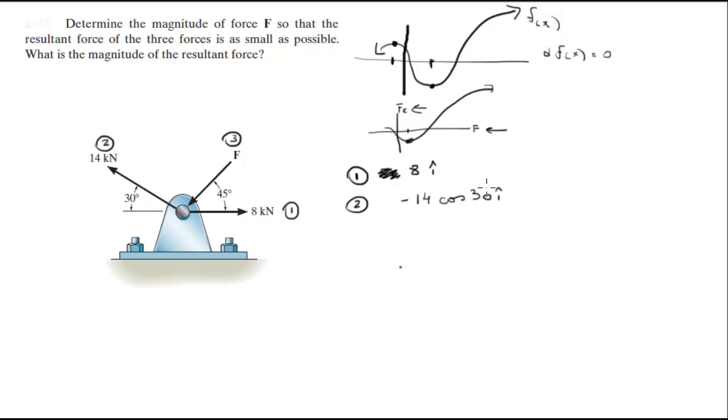30 in the i direction plus 14 sin of 30 in the j direction. Force 3, which is the force that we're trying to find, is negative f cosine of 45 in the i direction minus f sine of 45 in the j direction.